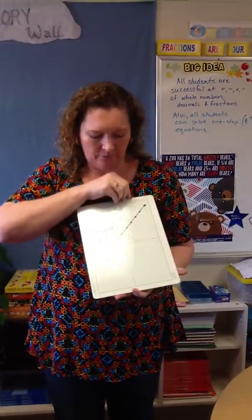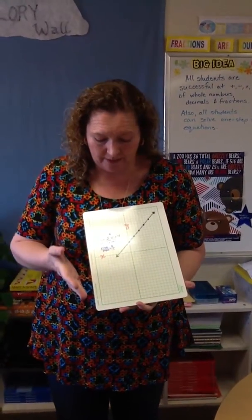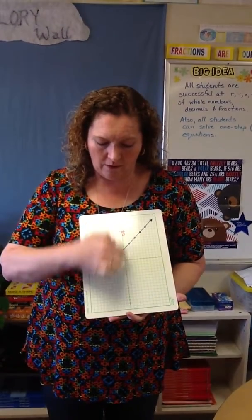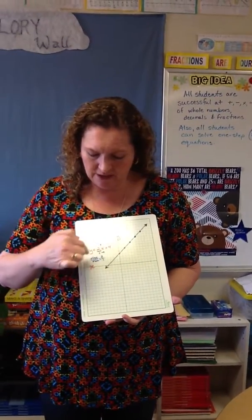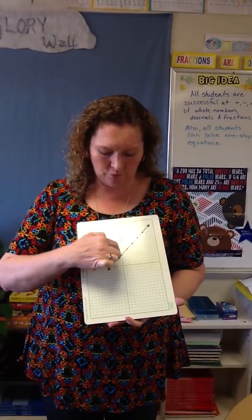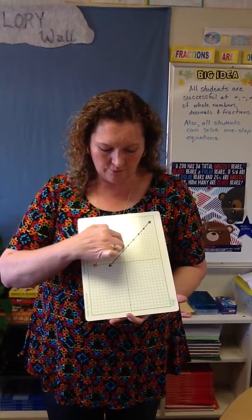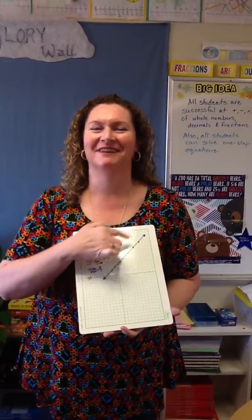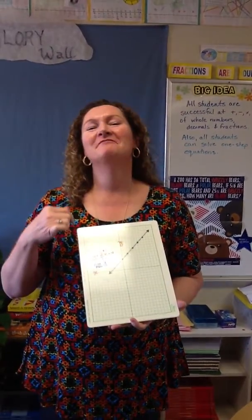What would that look like to graph? First, you graph the point positive 4 on the y-axis. Then you know that slope equals 2, so 2 equals the rise over the run. So you rise 2, run 1 — rise 2, run 1 — make several points, connect the dots, and there you will have the correct line.